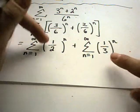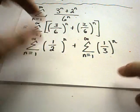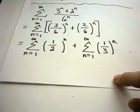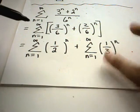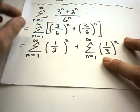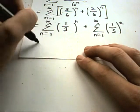And again, I notice these are geometric series. The numbers inside are between negative 1 and positive 1. Both of these are going to converge. If one piece had diverged, we could stop and say the whole thing diverges. But in this case, they both are converging.